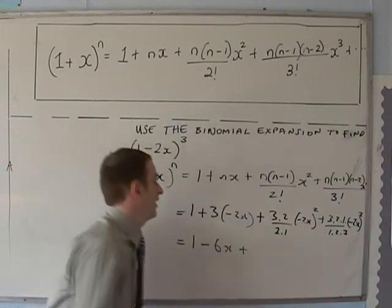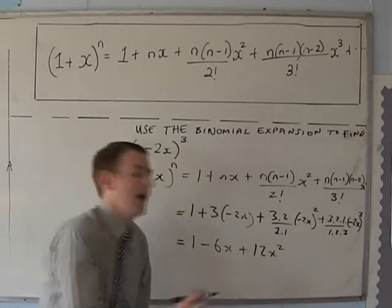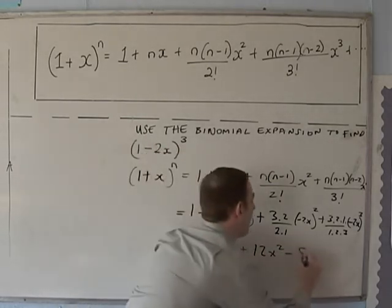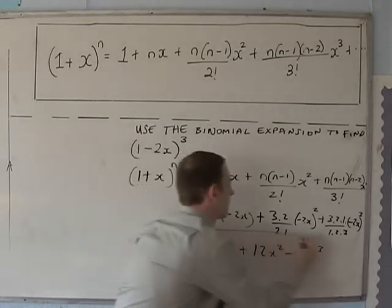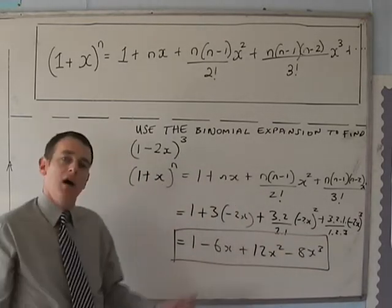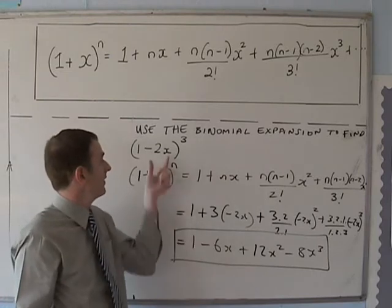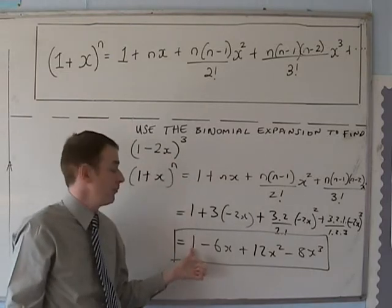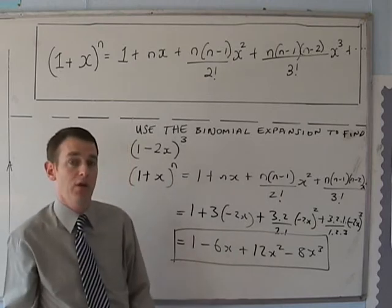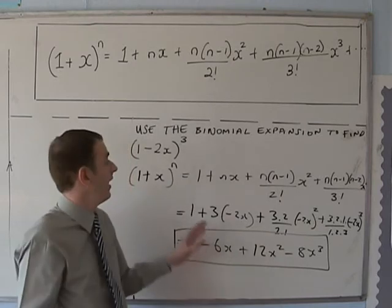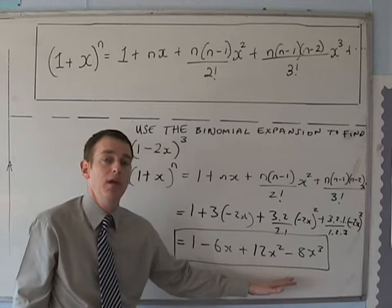That turns out to be plus 12x squared and minus 8x cubed as our final answer. Notice that when we had a minus in the bracket it produces a plus, minus, plus, minus alternating pattern. And again, this expansion does stop — but in the next example it won't.